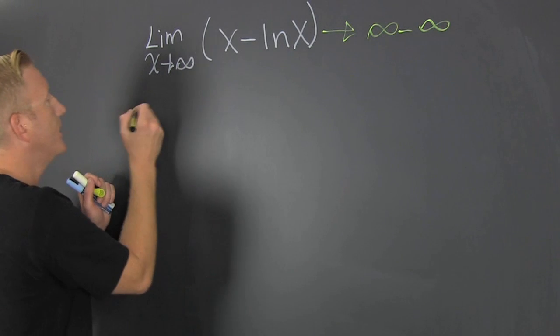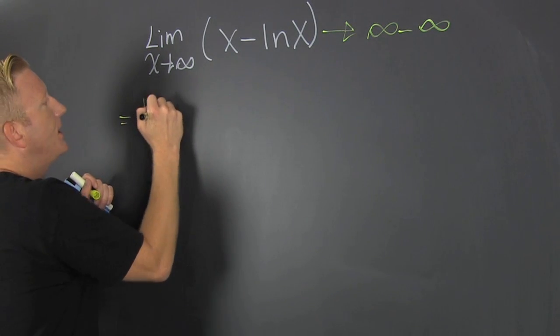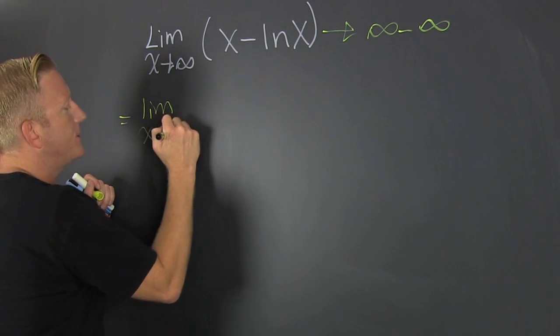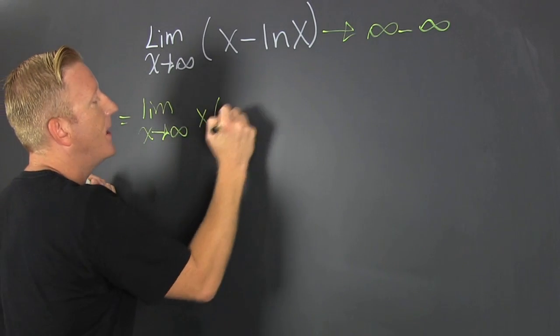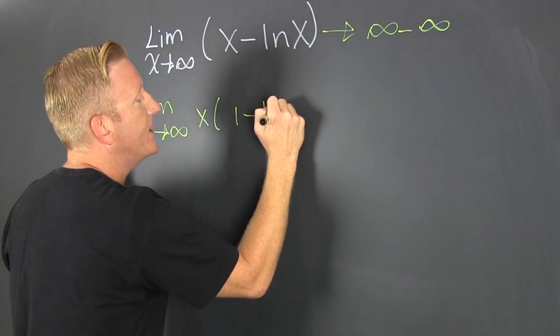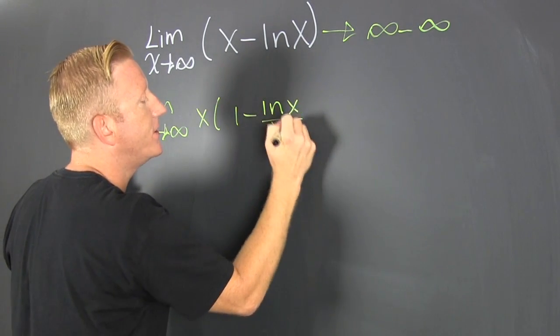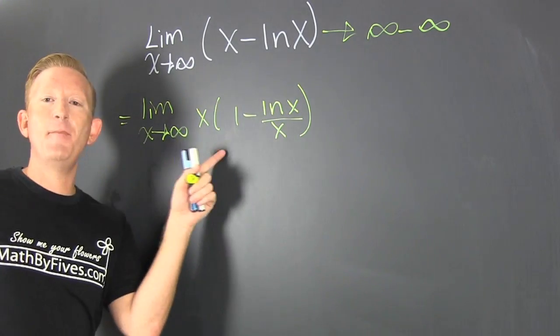And here we go. That's the limit as x goes to infinity of x times 1 minus the natural log of x over x. What did I do? I made it different.